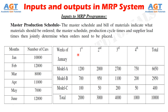The Master Production Schedule can also contain information on sub-models — for example, in a given week, how many of model one will be produced with power steering and how many with power windows, and so on.